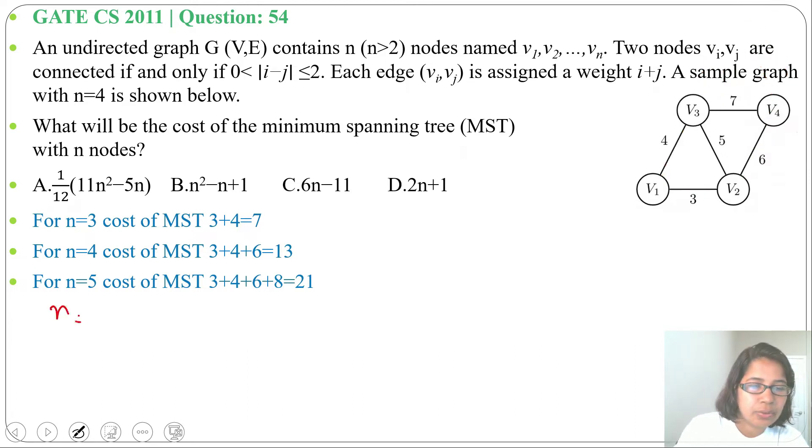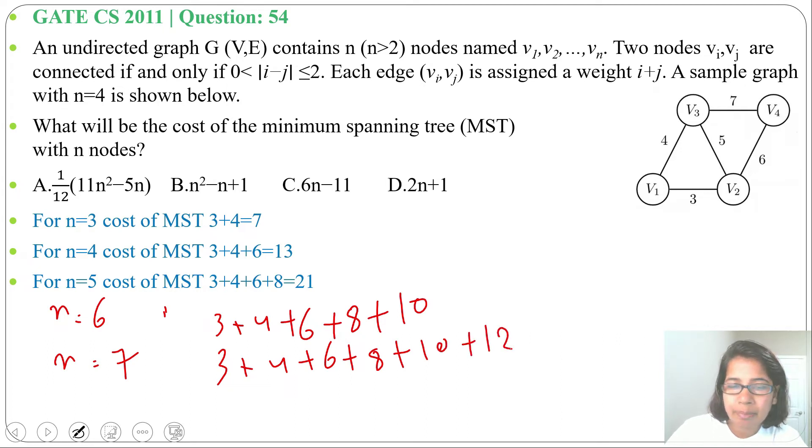Suppose n=6, then cost of minimum spanning tree will be 3+4+6+8+10. For n=7, cost will be 3+4+6+8+10+12. So from this we can get a pattern: 3+2×2+2×3 up to 2×(n-1).